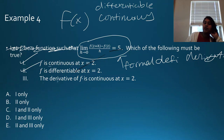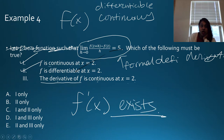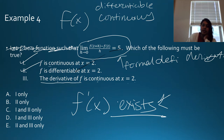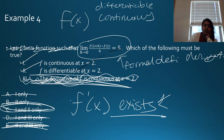Let's look at part 3: the derivative of f is continuous at x = 2. What does 'the derivative of f' mean? That's f′(x). Do I have any information about f′(x) other than that it exists? No — they didn't give me any information about f′(x) except that it exists. So this is the problem child — we can't confirm it. Therefore, the only answer is C: statements 1 and 2 only.